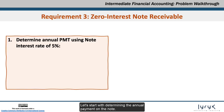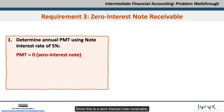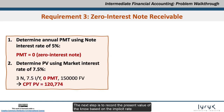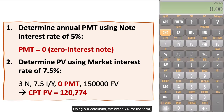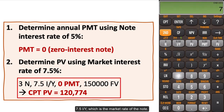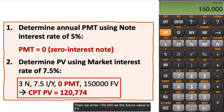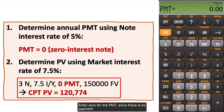Since this is a zero-interest note receivable, there are no payments that Wiley will make to Acme. The next step is to record the present value of the note based on the implicit rate that Acme must use to account for the note receivable. Using our calculator, we enter 3N for the term, 7.5 I/Y which is the market rate of the note. Then we enter 150,000 as the future value, or FV, representing the principal amount that must be paid on maturity. Enter 0 for the PMT since there is no payment, and compute the PV, which should be $120,744.